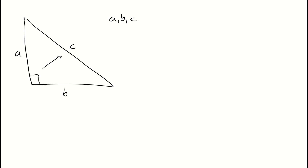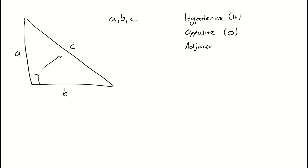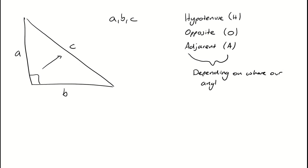For trigonometry, things are slightly different. We're now interested in labelling our hypotenuse, which we will give the letter H, our opposite side, which we can give the letter O, and what we call our adjacent side, which we're going to give the letter A. These are all decided depending on where our angle is.